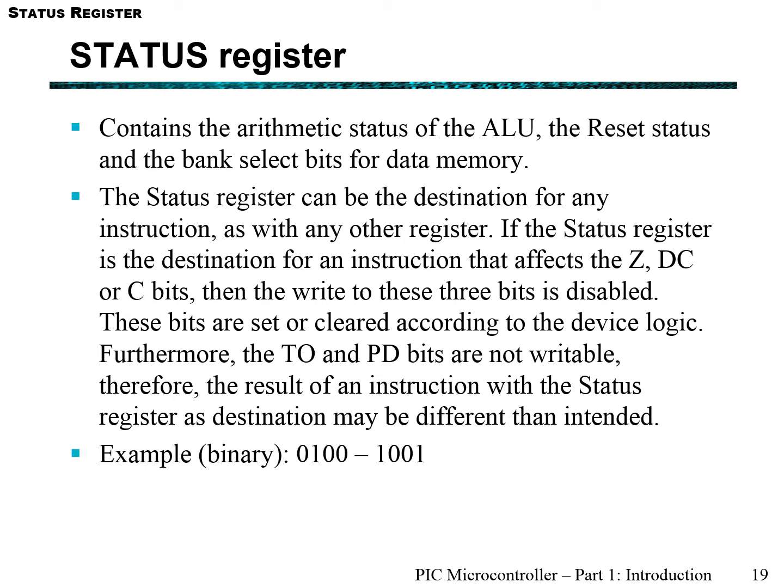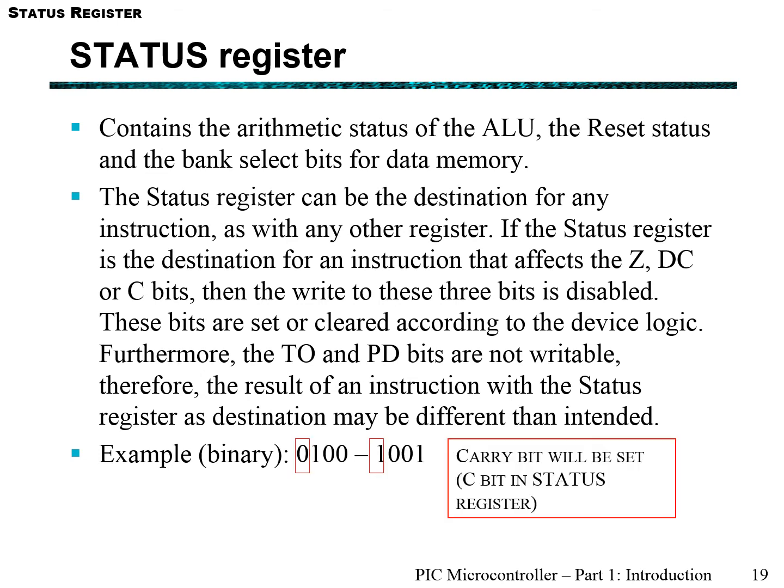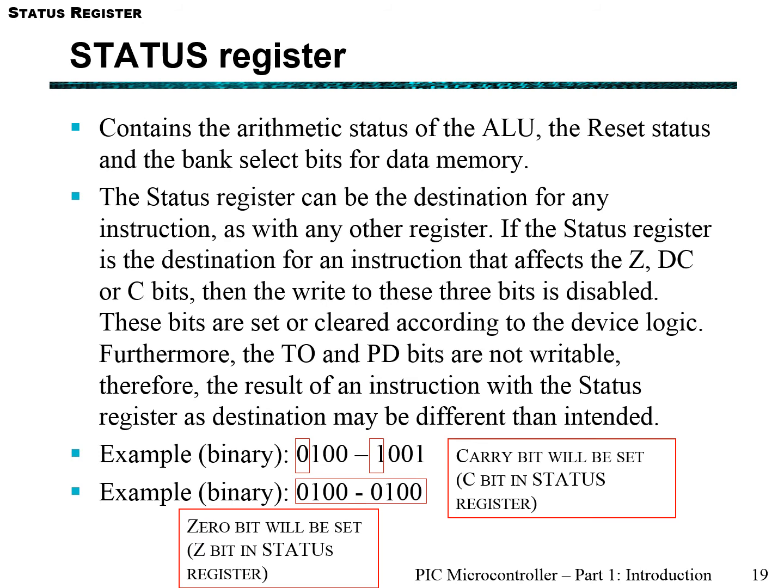Let's look at an example of a binary operation. Consider 01000 minus 1001. If you perform this arithmetic operation in the microcontroller, the carry bit in the status register will be set, because the most significant bit requires a carry — 0 minus 1 requires a carry from somewhere else. In another example, 0100 minus 0100: in this case, the zero bit in the status register will be set.